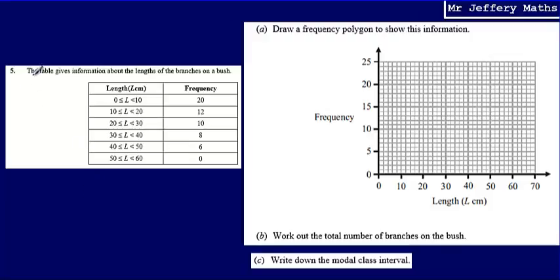This is question 5. Here we're told the table gives information about the lengths of the branches on a bush. What we have got here is some lengths and then the frequency. We're asked first of all to draw a frequency polygon to show this information.